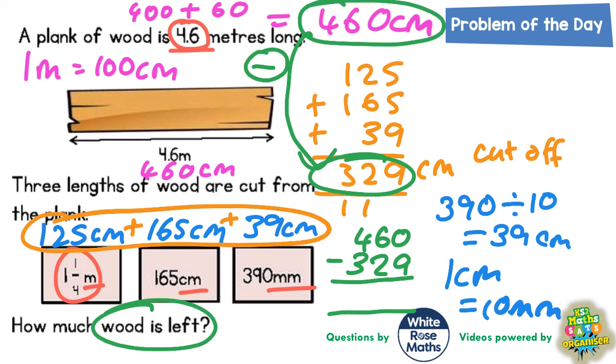So 0 take away 9 we can't do, so borrow. Borrow from the 6, that becomes 5, and the one we've borrowed makes the 0 into 10. 10 take away 9 is 1, 5 take away 2 is 3, 4 take away 3 is 1. So the amount of wood that is left is 131 centimeters. If you want that back into meters, that would be 1.31 meters.